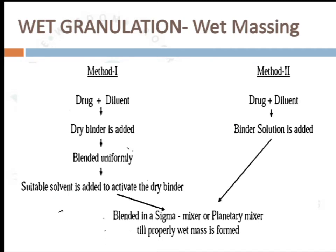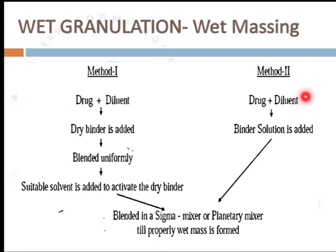Wet granulation can be done by two methods. In the first method, the drug and diluent are mixed, dry binders or granulating agent is added and blended uniformly, then a suitable solvent is added to activate the dry binders to get a wet mass. In the second method, the drug and diluent are mixed, then a binder solution is added to form a wet mass, using sigma blenders or planetary mixer blenders until a properly wet mass is produced. The consistency of the mass is very important.